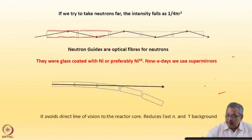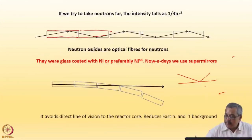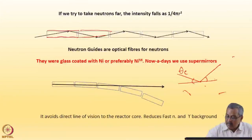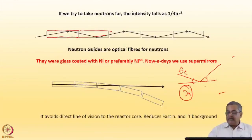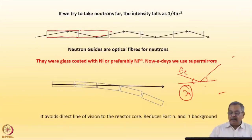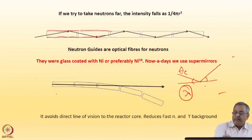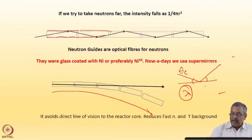Why are cold neutrons preferably transmitted using neutron guides? Because the critical angle of reflection depends on the wavelength of the neutrons. Longer wavelength means lower energy and a larger critical angle, so cold neutrons are preferentially transmitted in neutron guides.